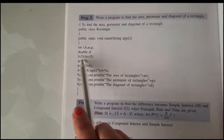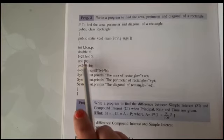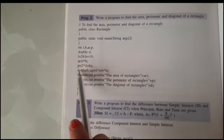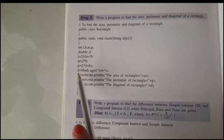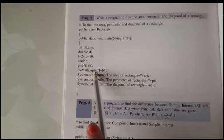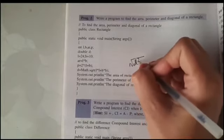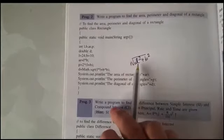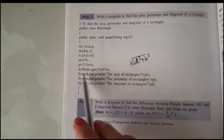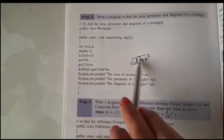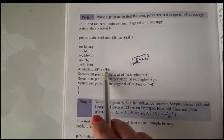Now first we will assign the value: l is equal to 24, breadth b is equal to 10. Then we will put the formula. Area formula: ar is equal to l multiply b. Perimeter: p is equal to 2 multiply bracket l plus b bracket close, then semicolon. Diagonal formula: d is equal to Math.sqrt — the formula is the square root of l squared plus b squared — so we write Math.sqrt(l*l + b*b), then bracket close, semicolon.